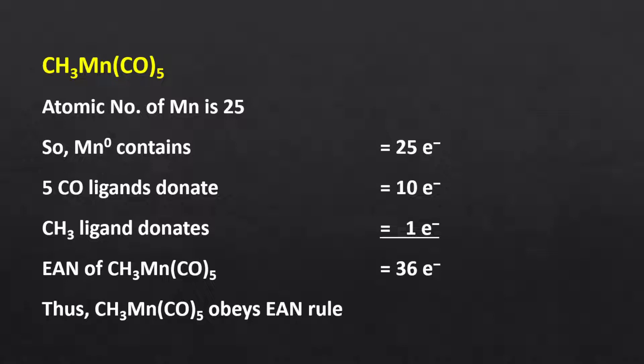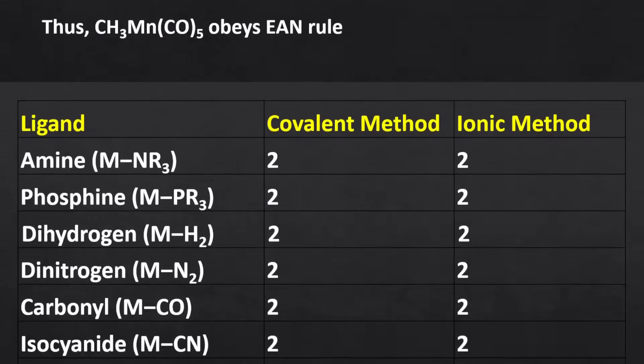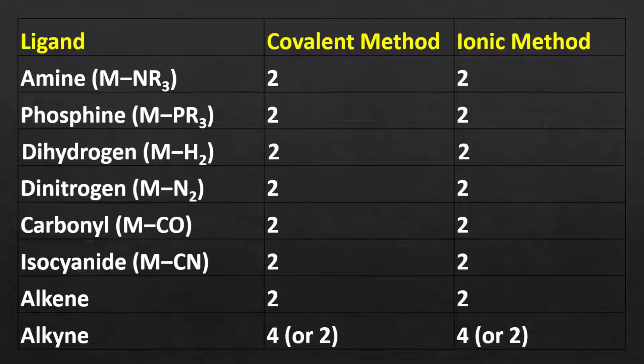Based on the atomic number and charges on the metal, one can easily calculate the number of electrons contributed by the metal. But the problem arises in finding the number of electrons donated by the ligand. There are so many ligands — some are neutral, while some are negative in charge. They also differ in the type of electrons used in bond formation with the metal. Here, I have tabulated the electron counts of various ligands.